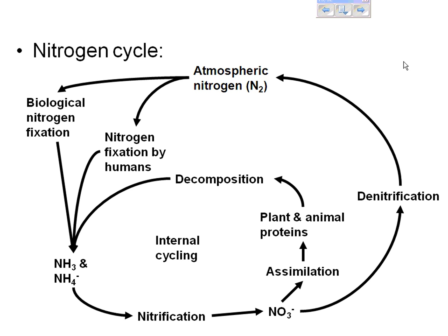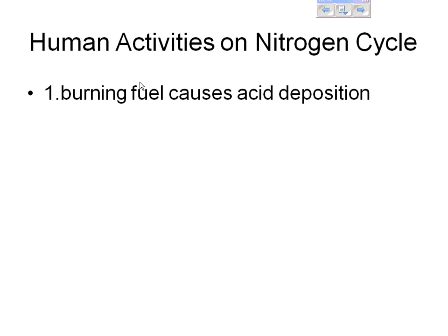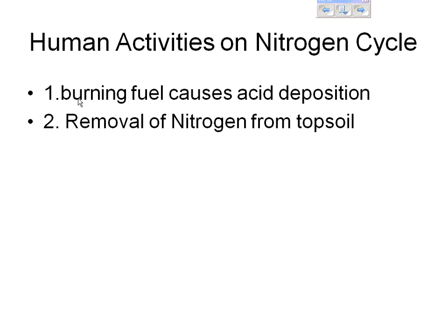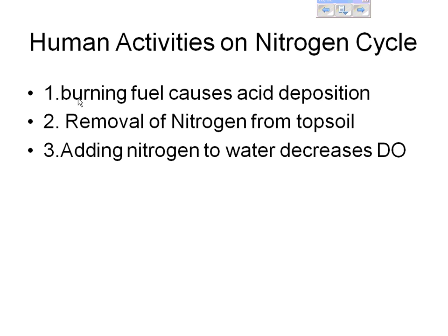Human activities on the nitrogen cycle: burning coal produces nitrogen dioxide and nitrogen oxides, which go into the atmosphere, combine with water, and make secondary pollutants — nitric acid and nitrous acid — leading to acid rain. Nitrogen also runs off from topsoil into waterways, decreasing dissolved oxygen.